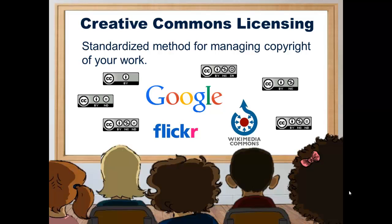Creative Commons licensing is built into the OER sites we discussed, so you do not need to ask permission from the author to use their resources. Many popular search engines and repositories like Google, Flickr, Wikimedia Commons, and Wikipedia also use Creative Commons licensing. One of my favorite things to do when using images is to use Google advanced search to select the type of license I want — whether I can modify something, and whether it's for a commercial setting or not.